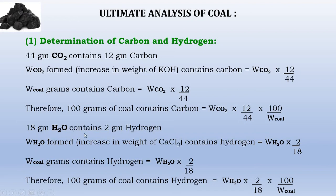18 grams of water vapors contain 2 grams of hydrogen. Therefore, whatever the weight of H₂O formed in the experiment, it contains hydrogen equal to weight of water vapors × (2/18). So 2/18 is the conversion factor that converts water vapors to hydrogen. The percentage hydrogen is: weight of H₂O × (2/18) × (100 / weight of coal).